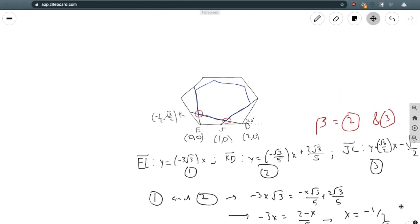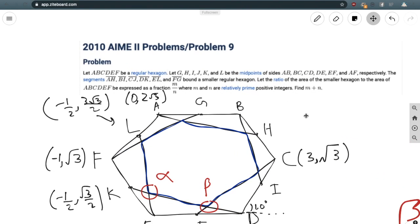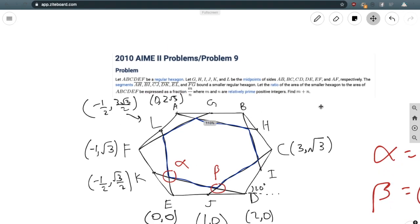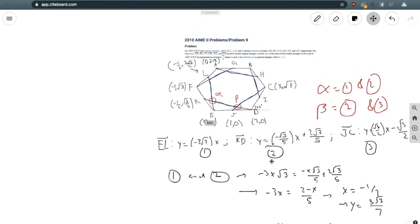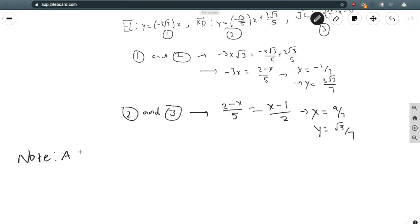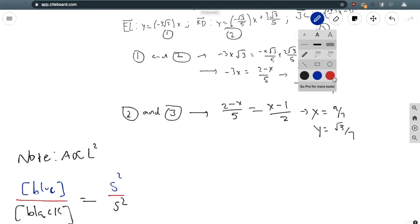Notice that the problem asks for the ratio of the area between the smaller hexagon and the larger hexagon. This is fundamental because the ratio of their areas will be proportional to the ratio of their side lengths squared. Even though the area of a hexagon is 3s²√3/2, we don't have to worry about the 3√3/2 constant since it's going to cancel anyway. Therefore, we just need to find the ratio of the side lengths squared of both hexagons. The small blue s² is the side length of the smaller hexagon squared, and we can find the side length by the distance formula.